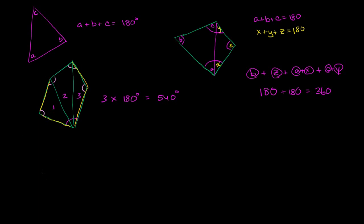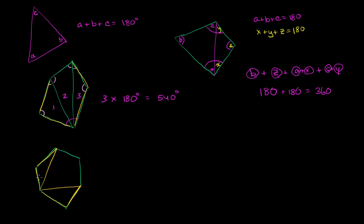So a hexagon has 1, 2, 3, 4, 5, 6 sides. And I can get one triangle out of these two sides of the actual hexagon, another triangle out of these two sides of the actual hexagon. And it looks like I can get another triangle out of each of the remaining sides — one out of that one, and then one out of that one right over there.